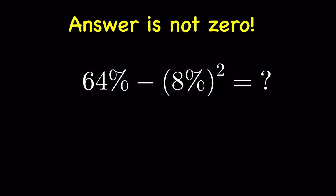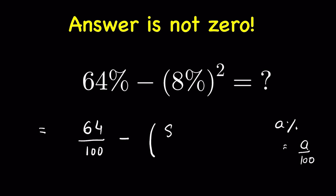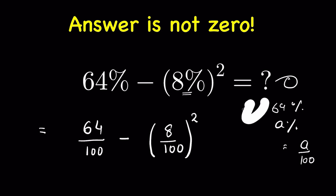First, we will have to convert the percentage into a fraction. 64 percent means 64 upon 100, because percentage means parts per 100 — so a percent is a upon 100. Then minus 8 percent is 8 upon 100, and that is squared. Now, 8 percent squared does NOT mean we simply square 8 to get 64, making it 64 percent, and then get zero. That is not how it is done.